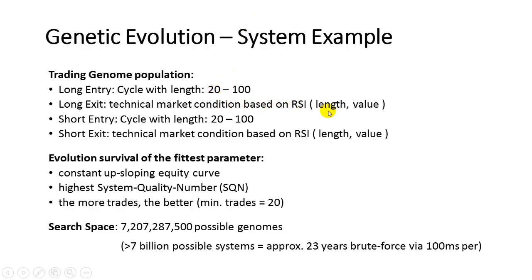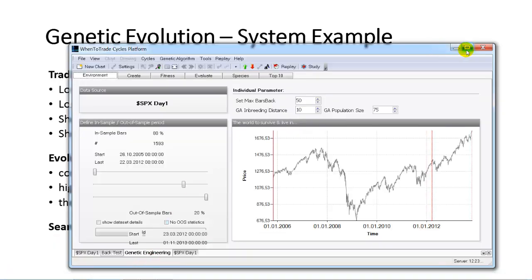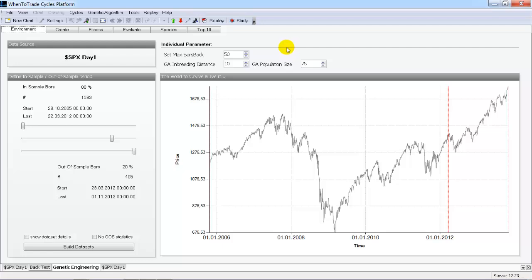If you combine every cycle with every RSI-based exit strategy and combine this with any short entry signal and any technical market condition, we get a total search space of over seven billion possible genomes. If a computer uses 100 milliseconds to evaluate each system over the last 15 years, you would need 23 years of computer power to calculate all seven billion systems with a brute force algorithm. That's where the genetic algorithm comes in.